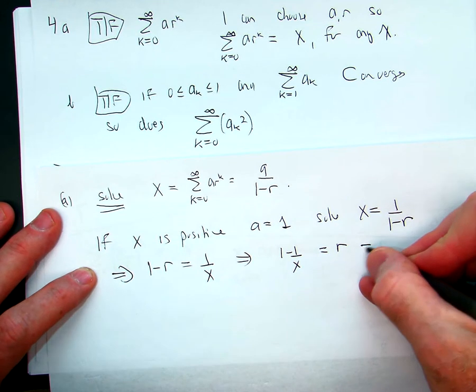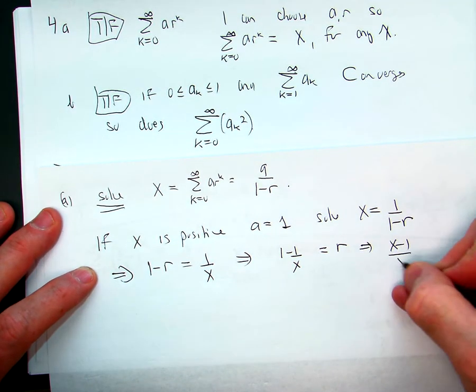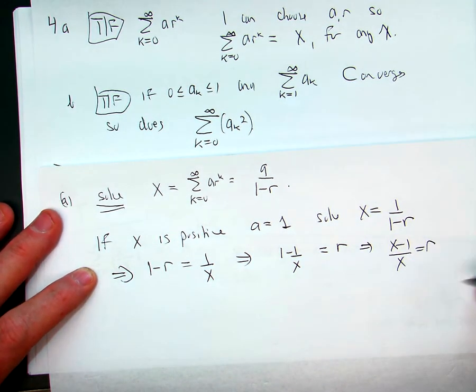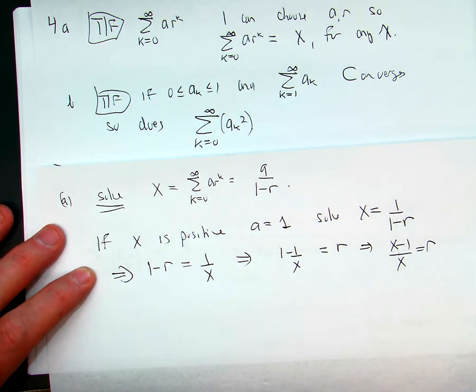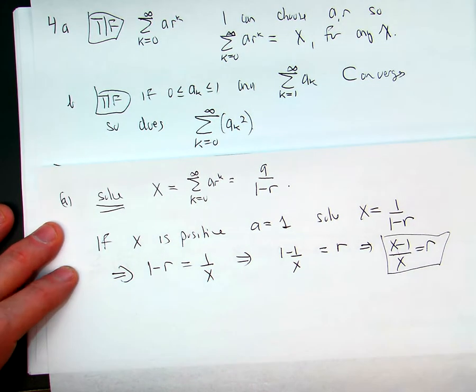And that tells me that x minus one over x is equal to r. And since x is positive, this is going to be less than one, but I'm not going to worry about that. But that's my solution.